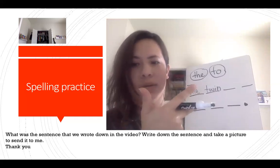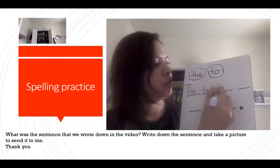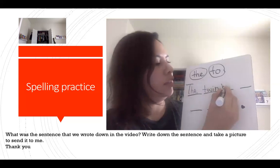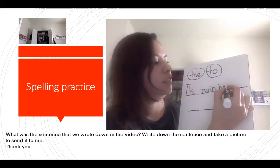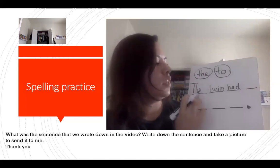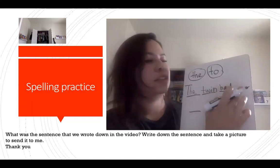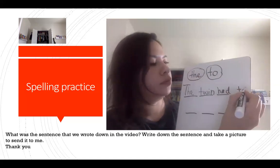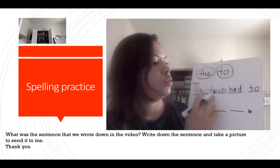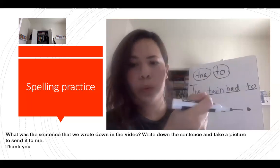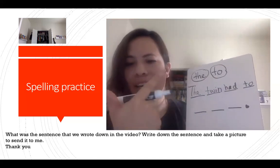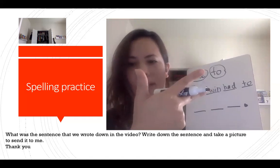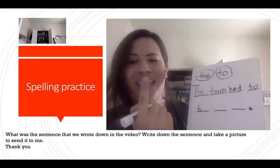H — what letter is that? H. A — apple — A. D — D for dog. Had. The twin had to — T-O. The twin had to hit — H-E-T... H, then the vowel E, then T.